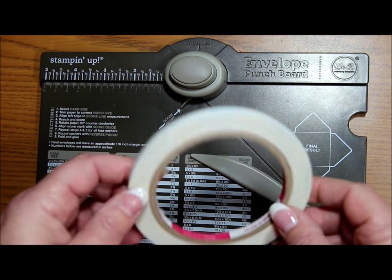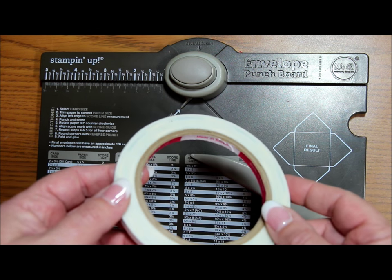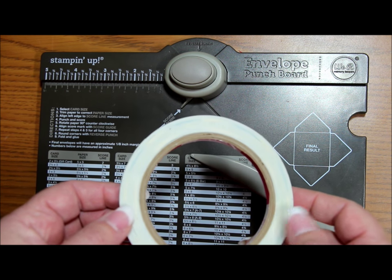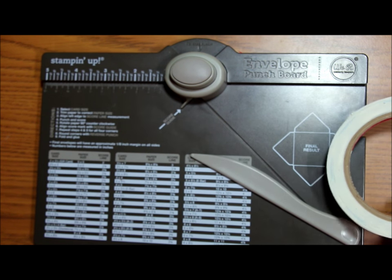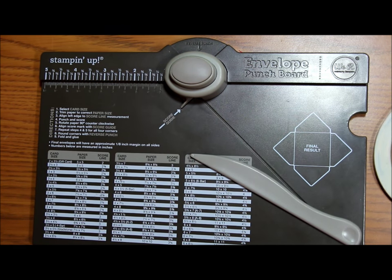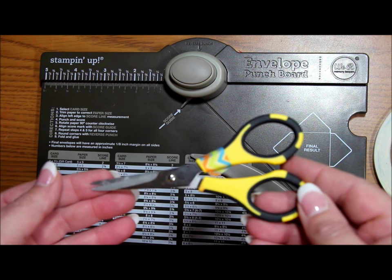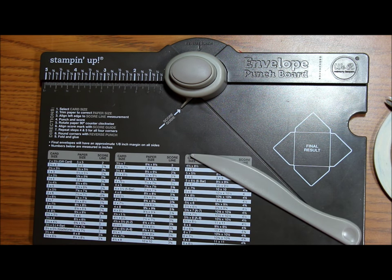You'll also need a strong adhesive. I'm going to be using score tape today, but you could use Fast Fuse or Red Line Sticky Tape or even a liquid glue, but any good quality strong adhesive and you'll need a pair of scissors. And of course you'll need a paper trimmer in order to cut your card stock or designer paper down to the appropriate size.